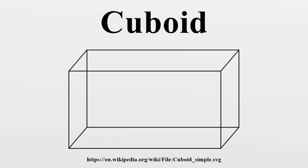Nets. The number of different nets for a simple cube is 11. However, this number increases significantly to 54 for a rectangular cuboid of three different lengths.